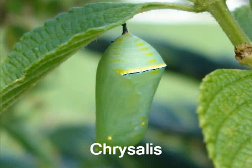Eventually, the caterpillar, now called a pupa, attaches itself to a twig and forms a hard shell called a chrysalis. Inside the chrysalis, the caterpillar is busy changing into a butterfly.